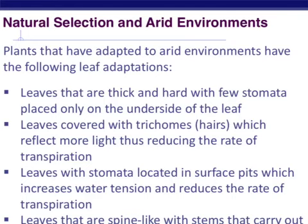Some plants have stomata located in surface pits — little depressions within the leaf. By lowering where the stomata is found, it increases water tension in the leaf and reduces the rate of transpiration. Another method is to convert leaves into spikes, kind of like a cactus. Instead of making leaves the main area of photosynthesis, the stems become completely green and are where photosynthesis takes place. The stems are also adapted to store water, and those spiky needles prevent animals from eating the plant while reducing surface area from which water is lost.